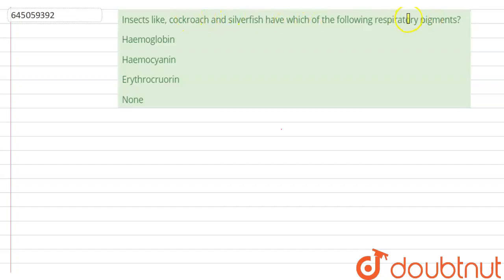Insects like cockroach and silverfish have which of the following respiratory pigments? The options are hemoglobin, hemocyanin, erythrochlorine, and none. The correct option for this question is hemocyanin, as the blood in cockroaches is called hemolymph and hemolymph is colorless